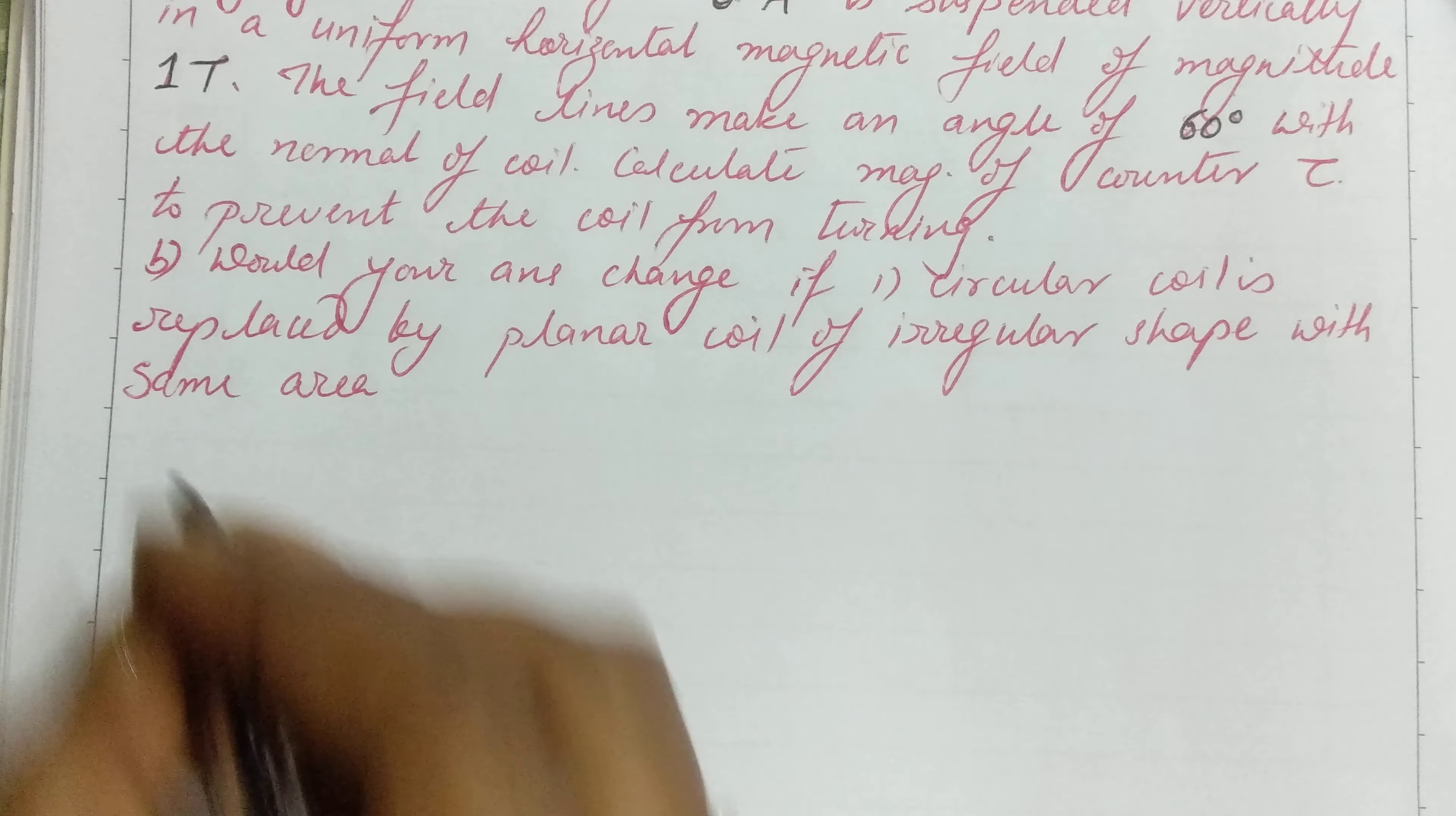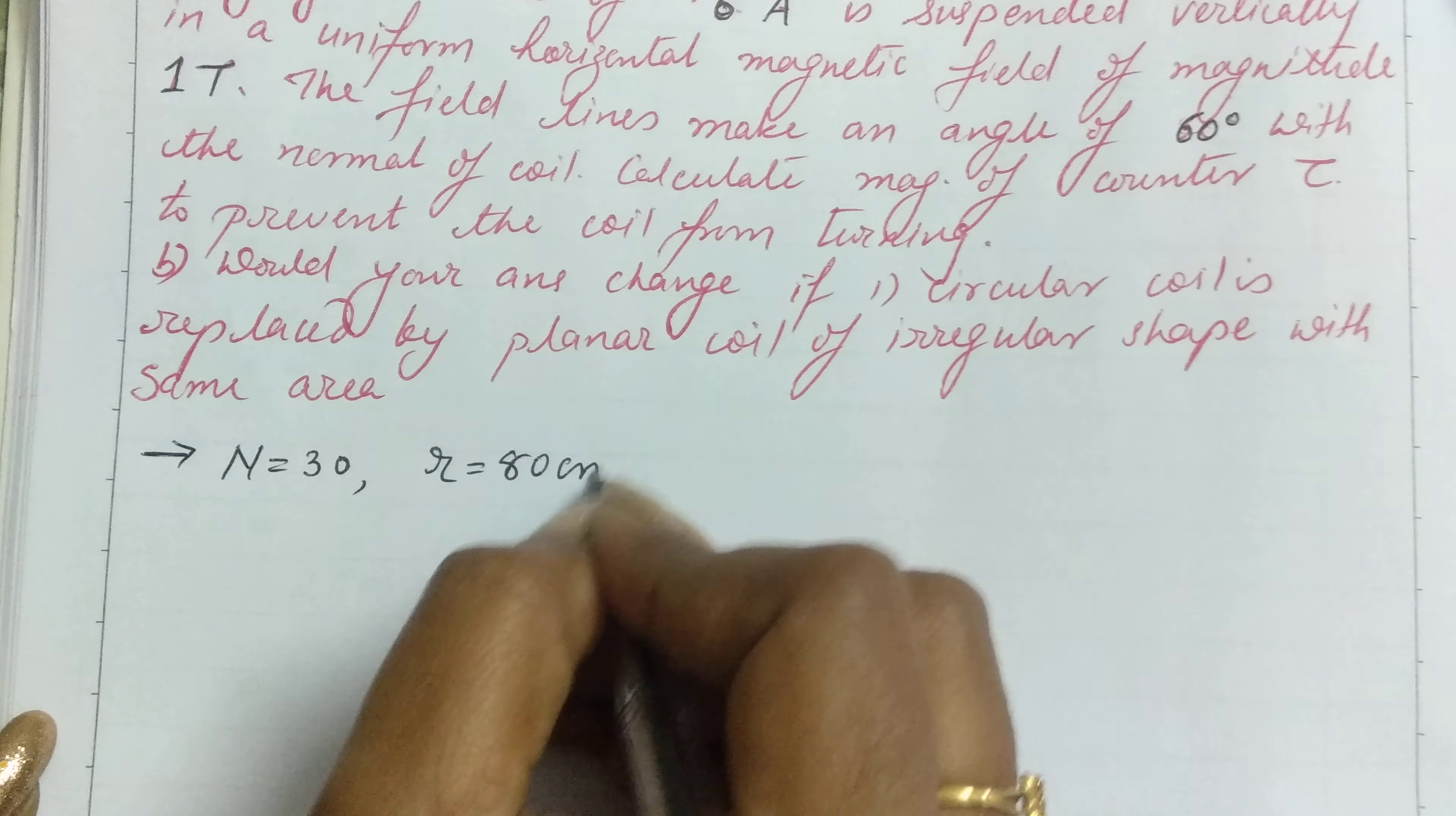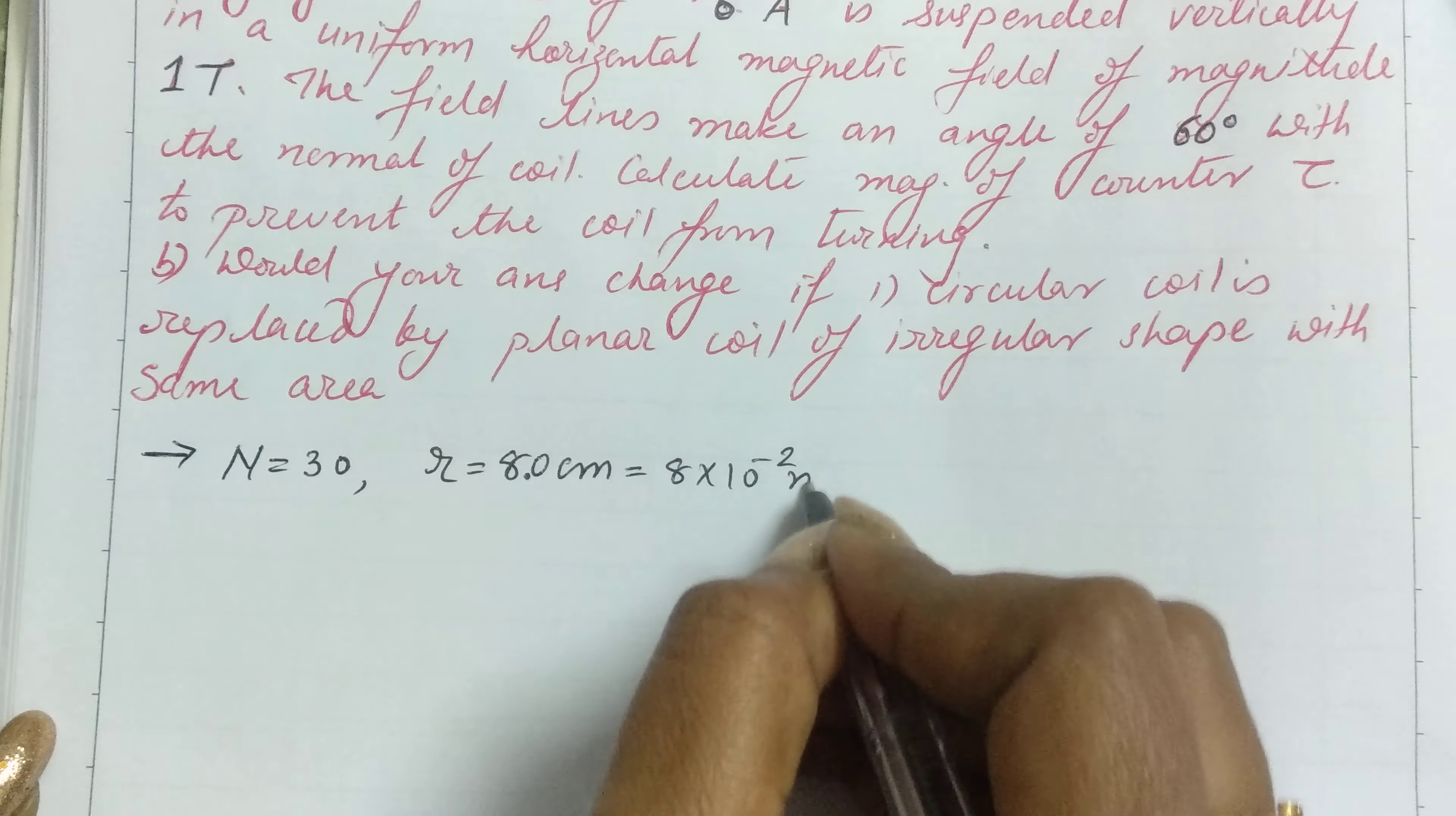First, we'll write all the given quantities. The number of turns in the coil is 30. The radius of the coil is 8 centimeters, which we'll convert to meters: 8 × 10^-2 m.